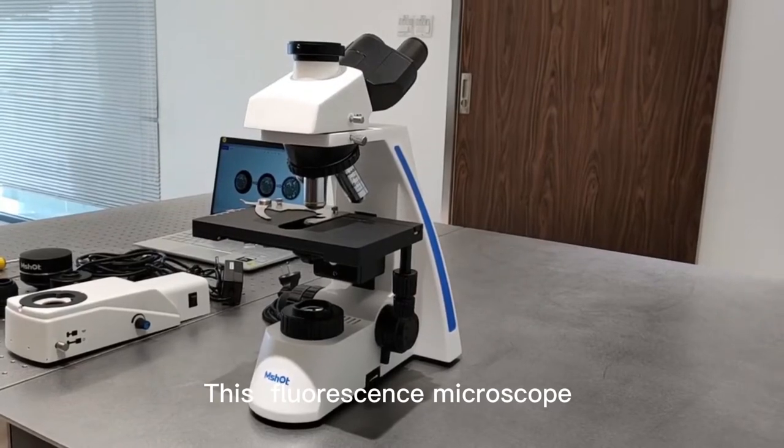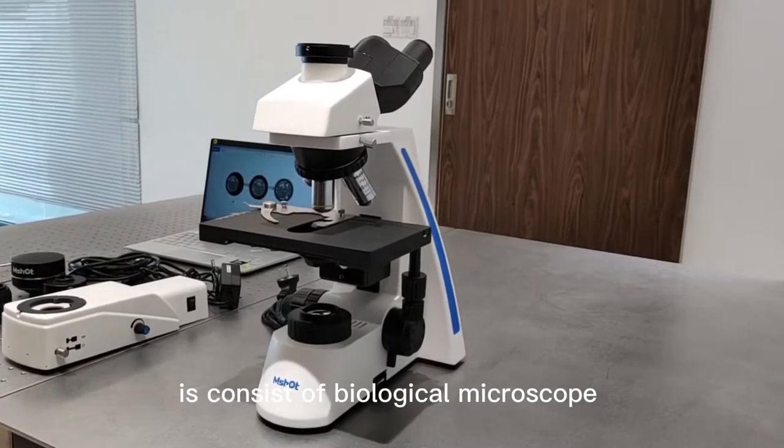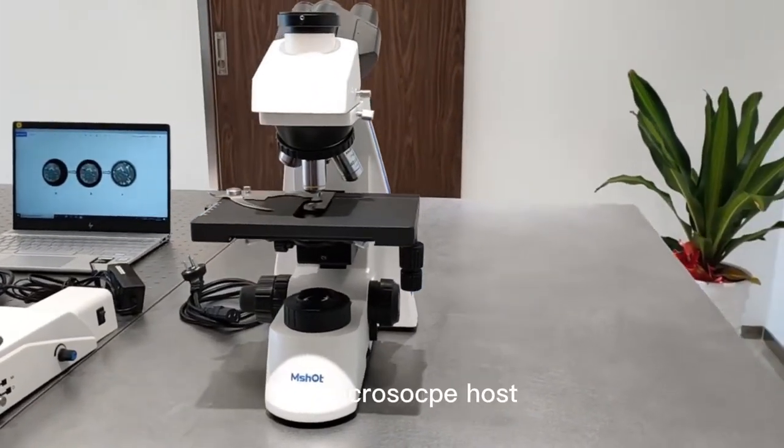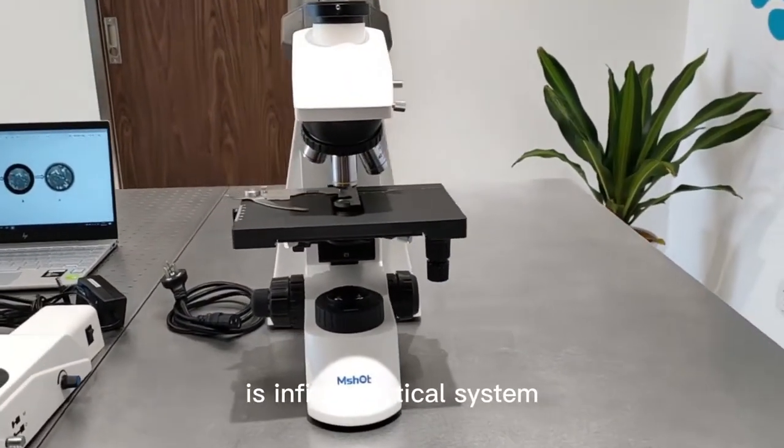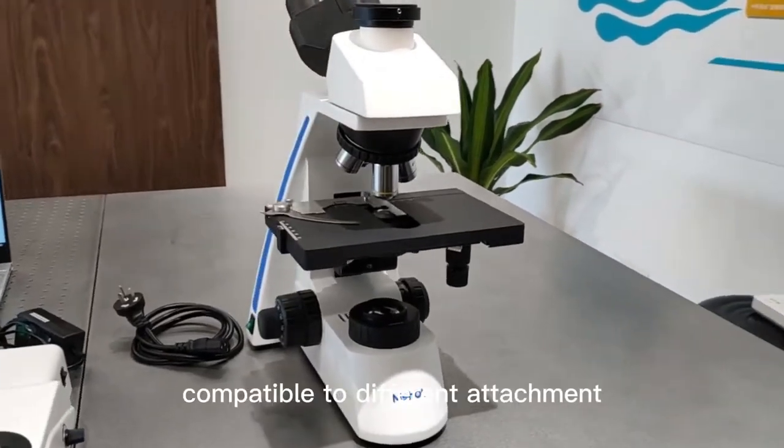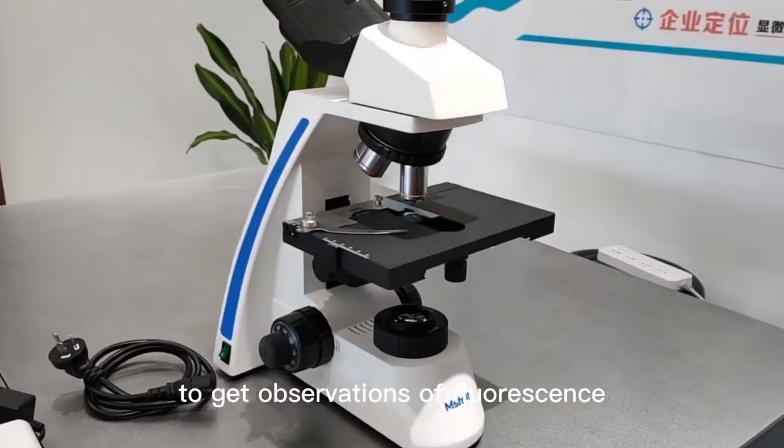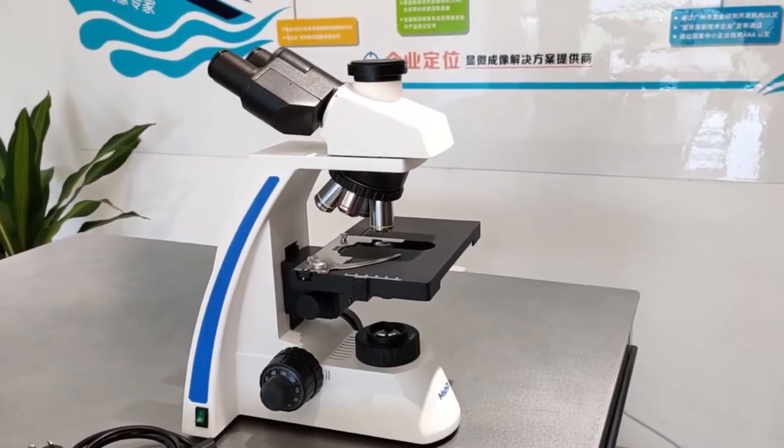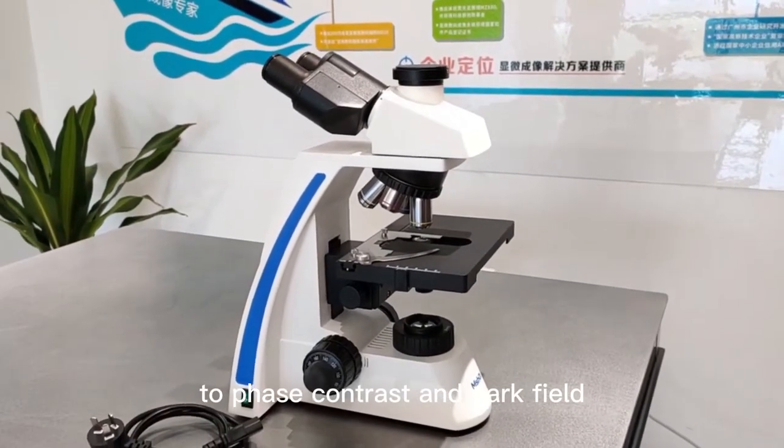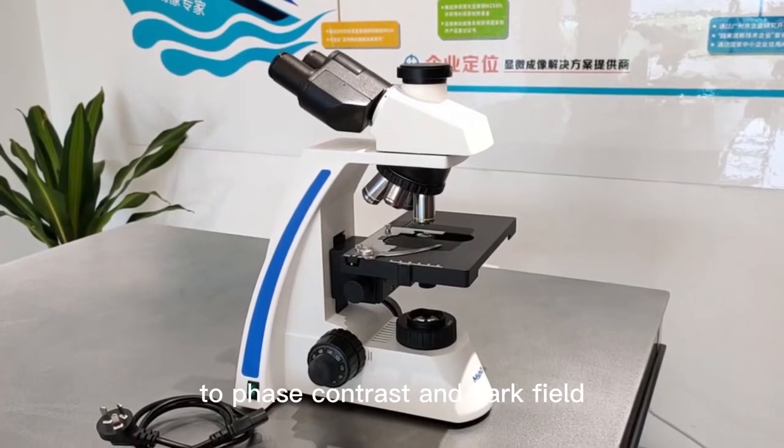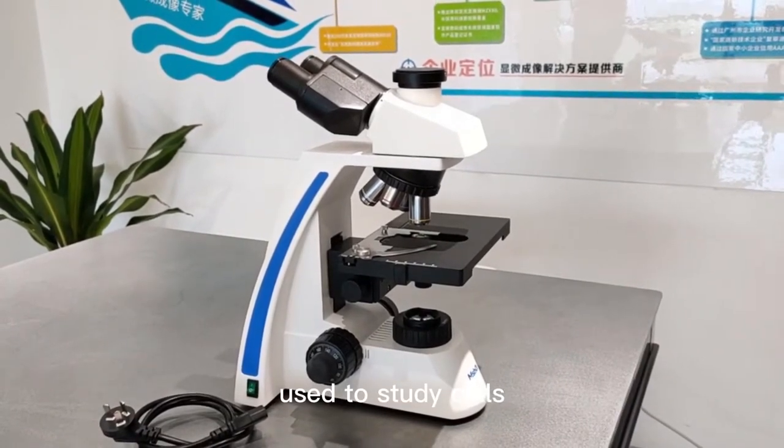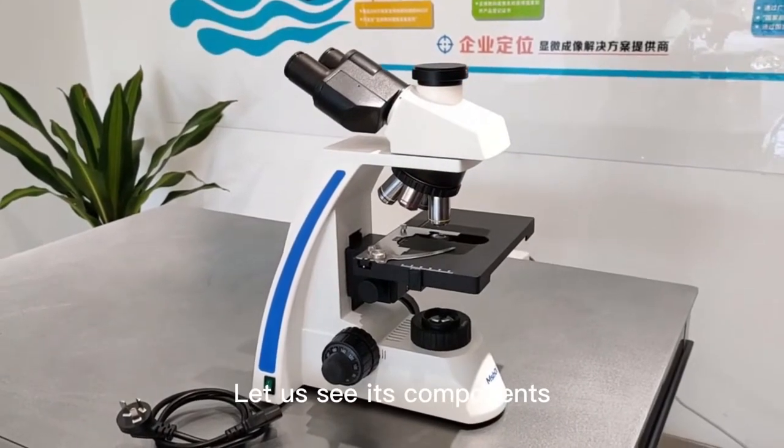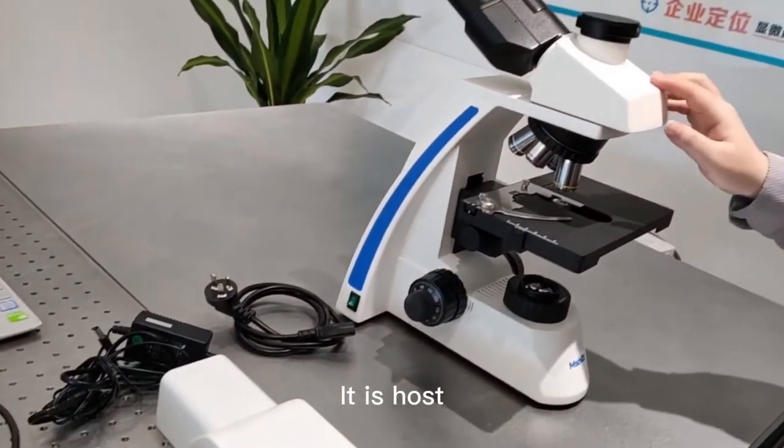This fluorescence microscope consists of a biological microscope and LED fluorescence illuminator. The microscope hosts an infinite optical system compatible to different attachments to get observations of fluorescence and bright field. Also, it can be upgraded to phase contrast and dark field, used to study cells, biological tissue, bacteria and microorganisms. Let us see its components.